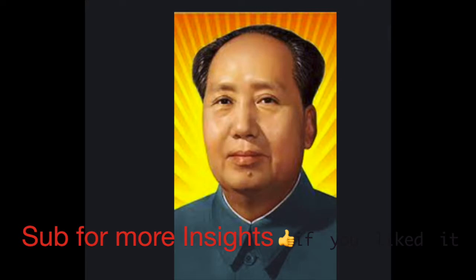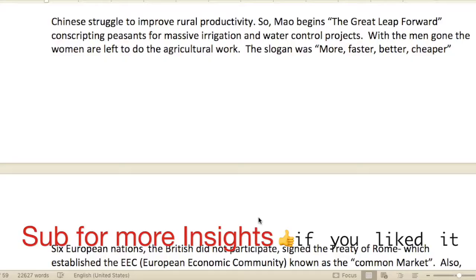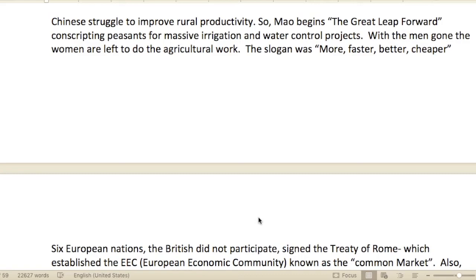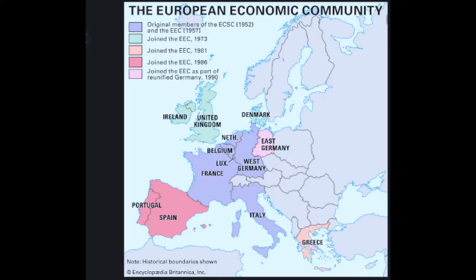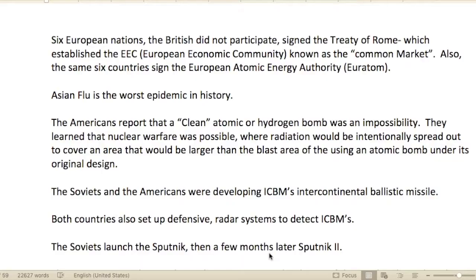The Chinese struggled to improve rural productivity, so Mao began the Great Leap Forward, conscripting peasants for massive irrigation and water control projects. With the men gone, women were left to do agricultural work. The slogan was: more, faster, better, cheaper. Six European nations — though the British did not participate — signed the Treaty of Rome, establishing the EEC, the European Economic Community, known as the Common Market. Those same six countries also signed the European Atomic Energy Authority, called Euratom.